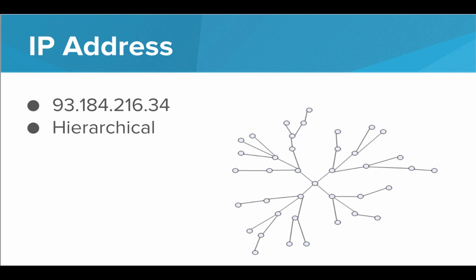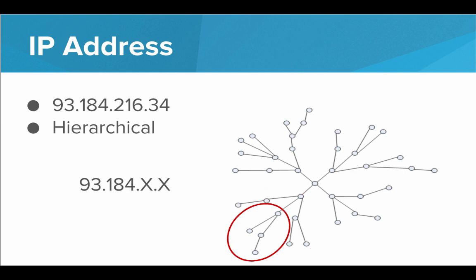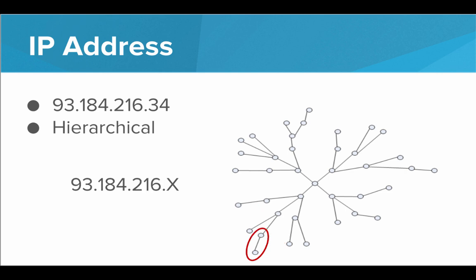If we use this image to represent the entire internet, we see that it'd be very hard to find any particular location if each of these circles was just randomly assigned a number — we would have to iterate over every single one and search every single circle until we found the one we were looking for. This is why we need this hierarchical layout. With the given example, the first number specifies the network — this could be the 93 network. The next number is the subnetwork: the 184 branch. Within the 184 branch, we need the 216 branch — that specifies this tiny little subnetwork. And now within there, all we have to do is look at 34 — that's the 34 device in that tiny subnetwork. It's very easy to go from the broad, massive internet and narrow in piece by piece to the actual device we're looking for.